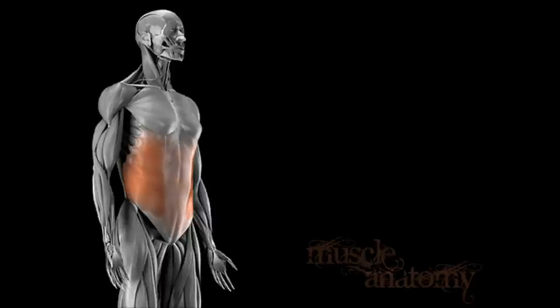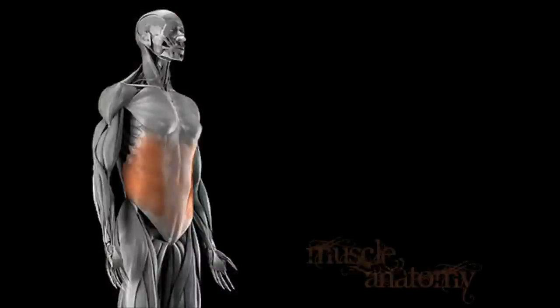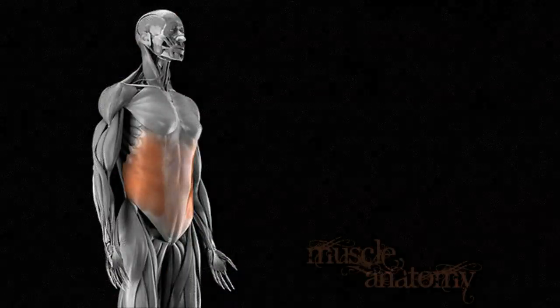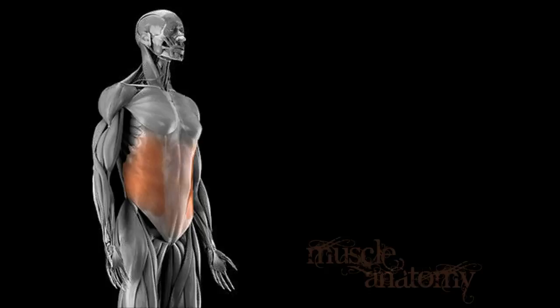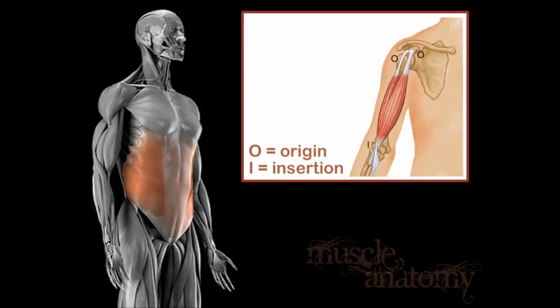Hi, I'm going to be talking about the muscles of the body — where they originate, where they insert, and the various actions that they perform. Before I get started, I wanted to go over some general basics. Remember that the origin of a muscle is the attachment site to the bone that does not move, and the insertion is the attachment site of the bone that does move.